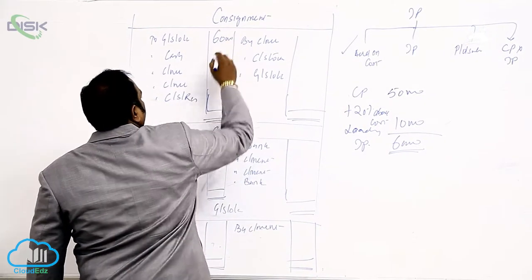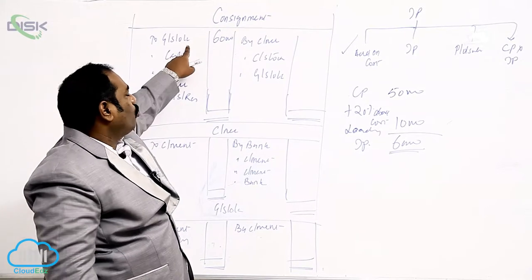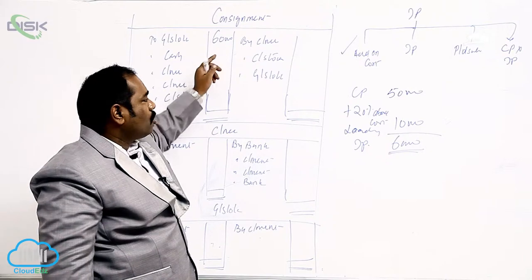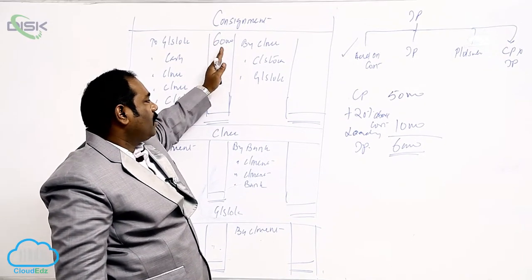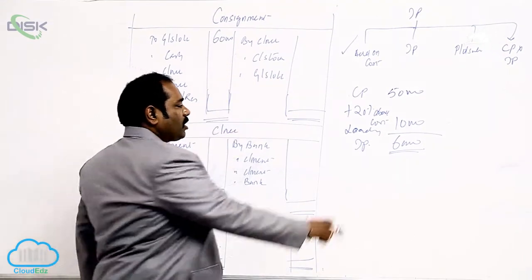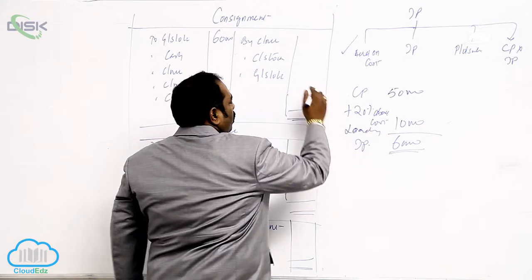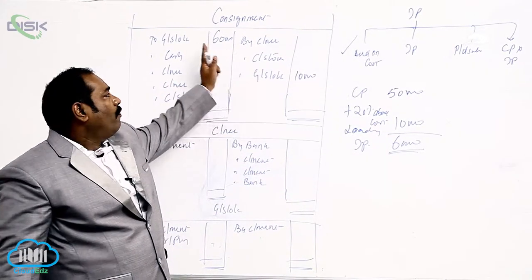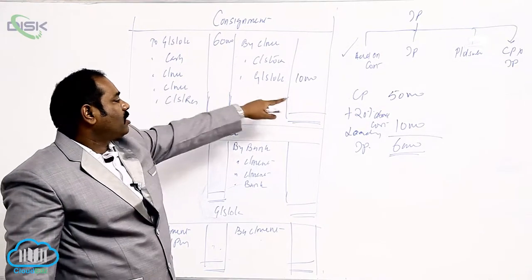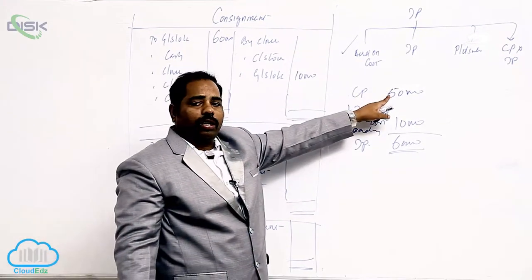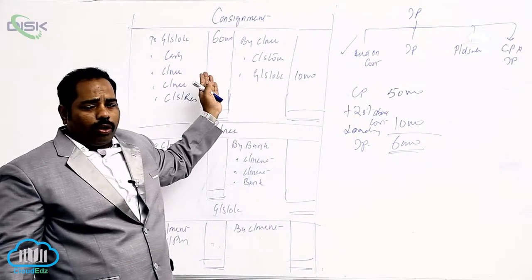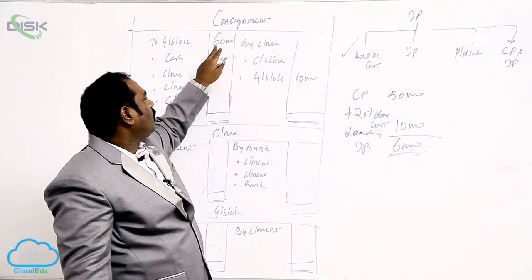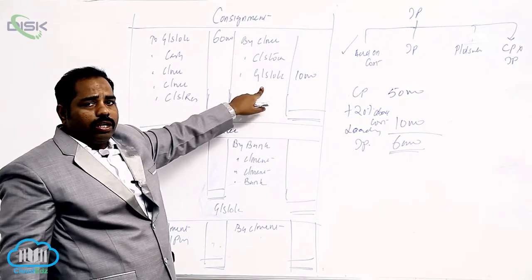Whenever you add extra price and send the goods, the entry is consignment to goods sent on consignment. This extra price has to be unloaded by writing on the credit side. The extra price added here is 10,000, unloaded on the credit side. So 60 minus 10 gives you the cost price, bringing it back down to cost price in order to get the profit.